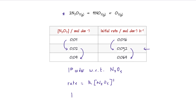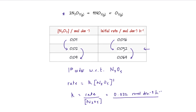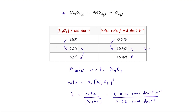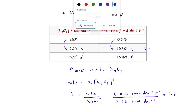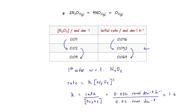Rearranging the equation, k equals rate divided by the concentration of N2O5. The rate was 0.032 mol dm⁻³ hr⁻¹, and the concentration was 0.02 mol dm⁻³. When you plug that into your calculator, you get a value for k of 1.6. For the units, mol dm⁻³ hr⁻¹ on the top and mol dm⁻³ on the bottom — these concentration units cancel out, so the units for k are simply hr⁻¹.